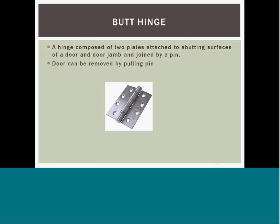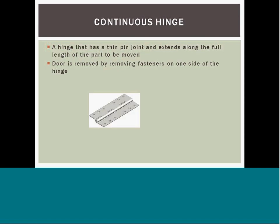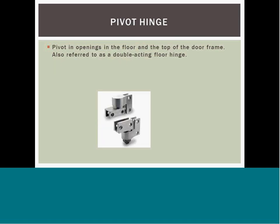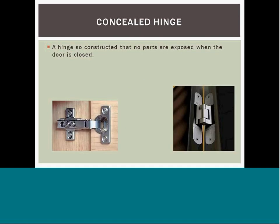Next, we will discuss the various types of hinges. The butt hinge connects both the jamb side and the door side and connects via pins. This hinge is becoming more common in healthcare today because of its durability and resistance to normal wear and tear. Doors with continuous hinges are removed by removing the fasteners on the side of the hinge. Pivot hinges are located at the top and bottom of the door and are commonly found on glass doors. Concealed hinges provide aesthetic appeal because users cannot visibly see the hinge when the door is closed; these are commonly used on cabinet doors.